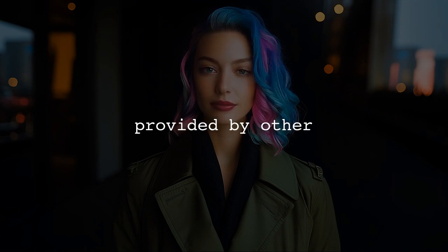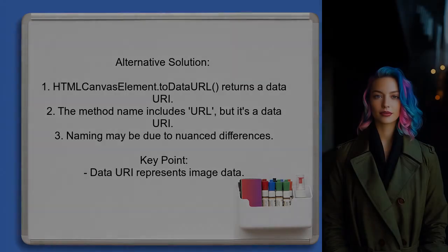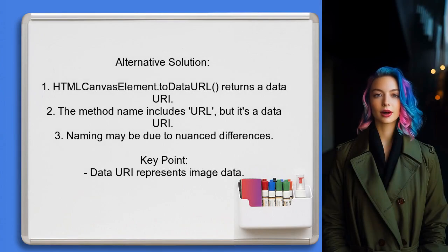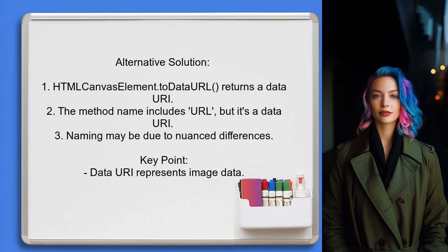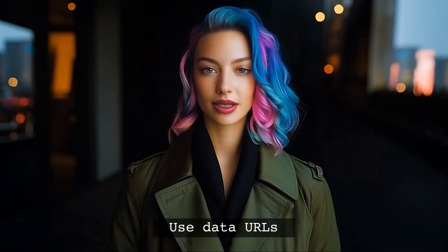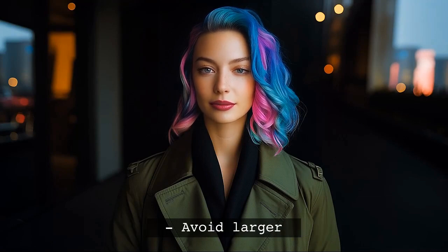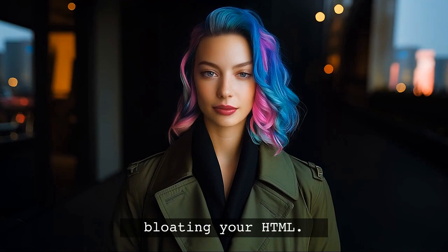Now let's look at the answers provided by other users. This user clarifies the confusion between data URI and data URL. They explain that the method HTMLCanvasElement.toDataURL returns a data URI which represents an image. The method name includes 'URL', but the return value is actually a data URI. They suggest that the naming may be due to the nuanced differences between the two terms. Here's a quick tip: use data URLs for small images or icons to improve load times, but be cautious with larger files as they can bloat your HTML.